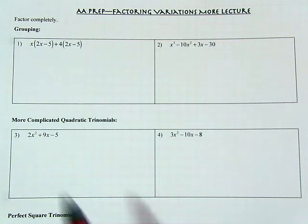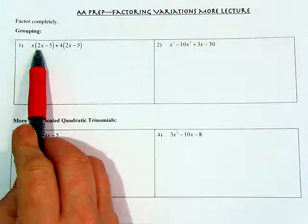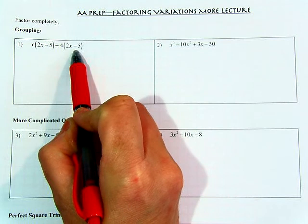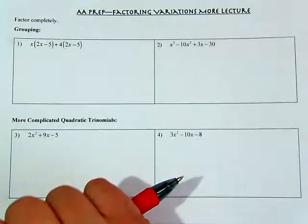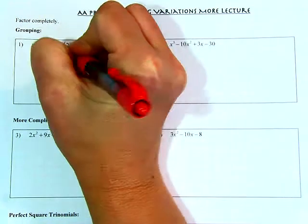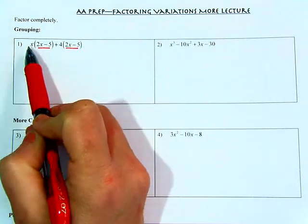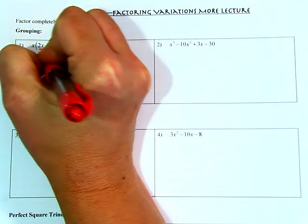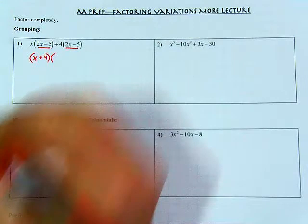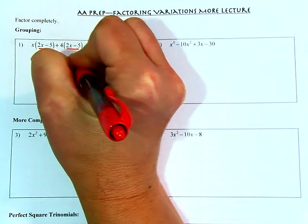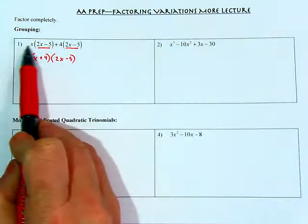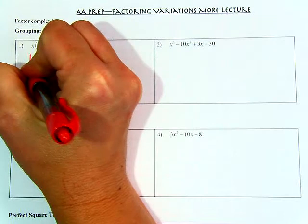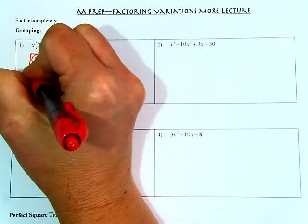So here if I look at the first one, what's interesting is that I have x multiplied over the package of 2x minus 5, and then I have 4 multiplied over the same package of 2x minus 5. So what ends up happening is that when these two packages match like so, I can regroup it and take the x with that plus 4, join that together as a binomial, multiplied by the 2x minus 5. So I can view this as x plus 4 times 2x minus 5.